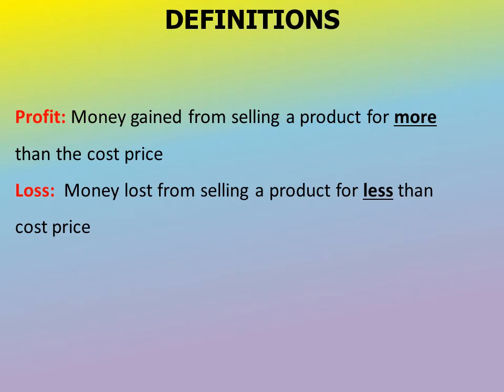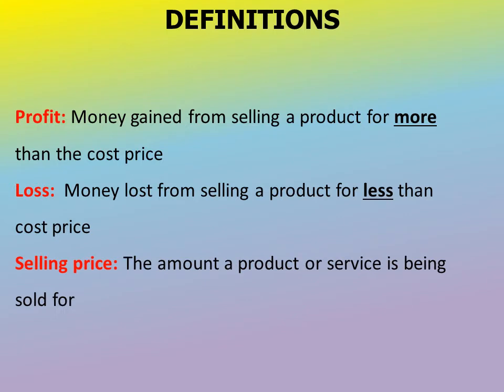The next term we're going to deal with is selling price. The selling price refers to the amount a product or service is being sold for. A product is something you can touch, like a cup or a pen. A service is something you do for somebody, like washing a car or painting a house.